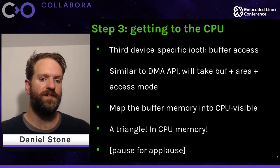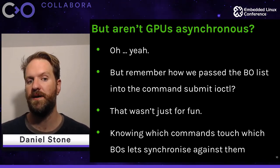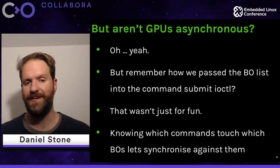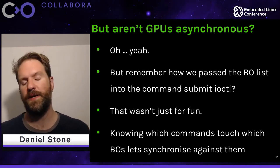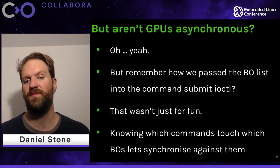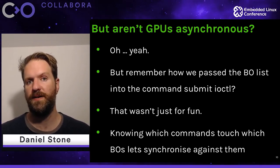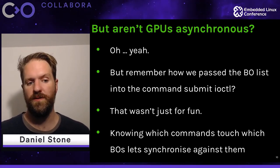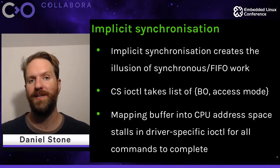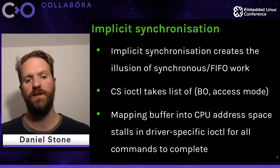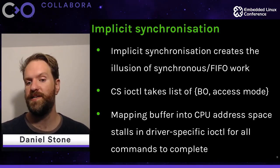The bit we want to get to is synchronisation. GPUs are extremely asynchronous, extremely parallel, and very deeply pipelined engines. In this lightning-quick overview of how you'd deal with them, we haven't discussed synchronisation — which is kind of the point of the talk. Going back to command submission: it takes a list of buffer objects the command will access, with a read/write mode. This allows the kernel to reason about exactly what's going to happen, enabling what we call implicit synchronisation.